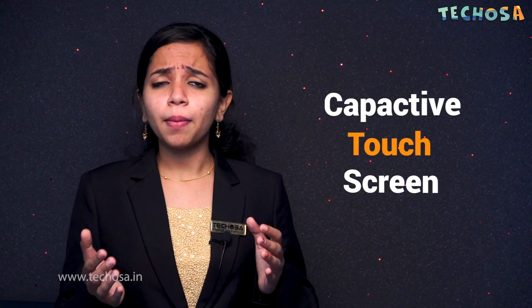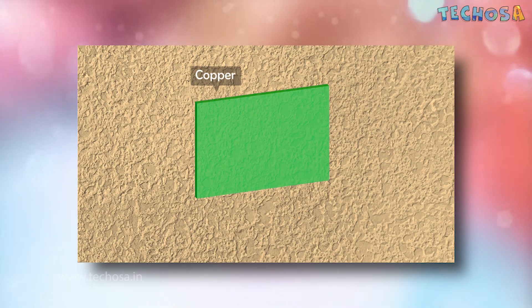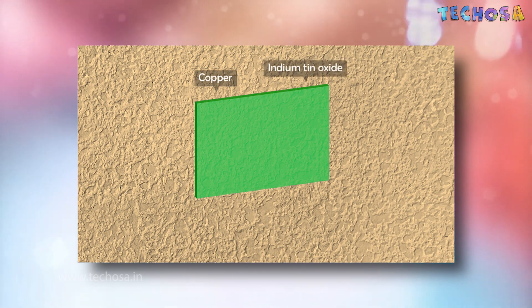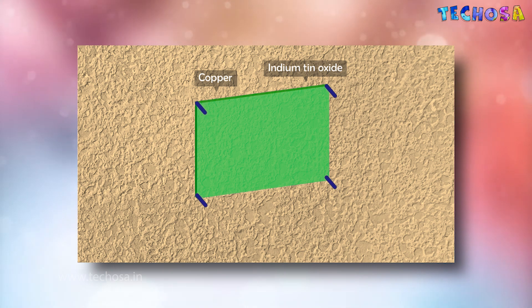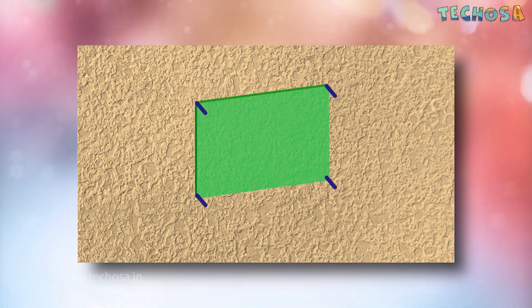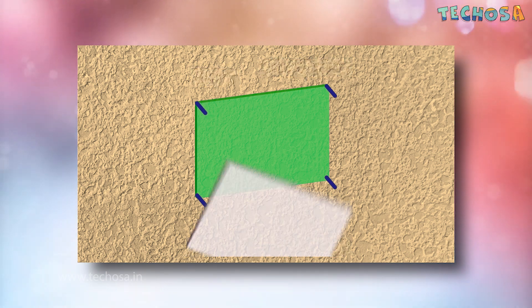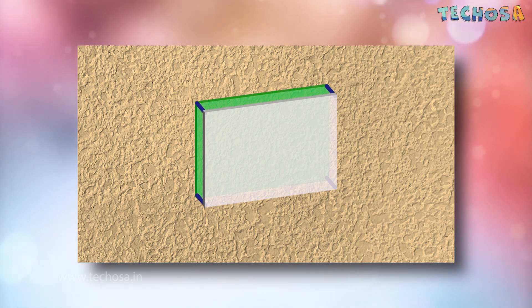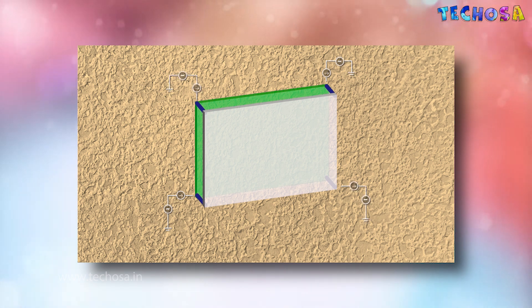Capacitive touchscreens are the second most popular type. In a surface capacitive touchscreen monitor, a transparent electrode layer is placed on top of a glass panel, which is then covered by a protective cover.